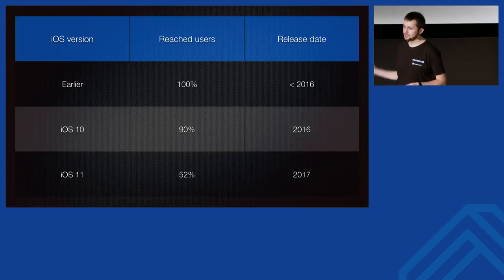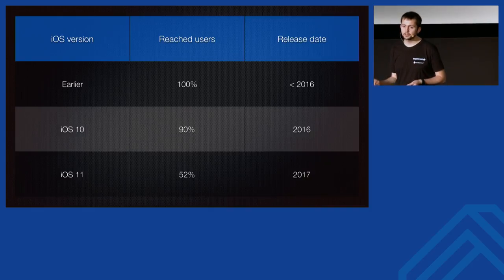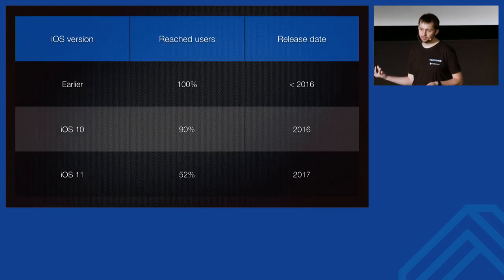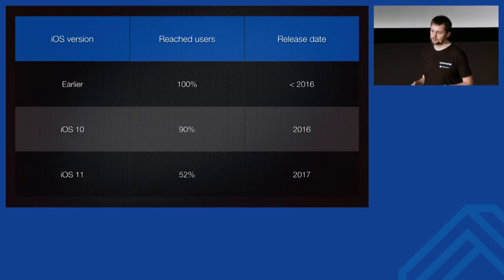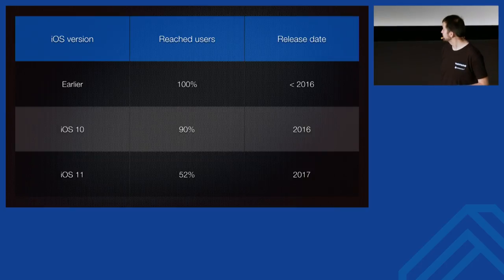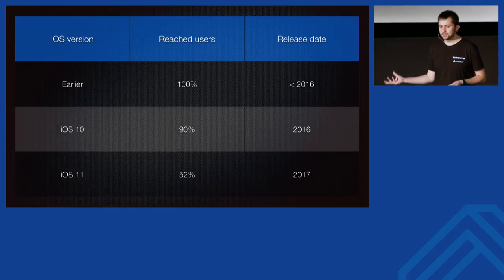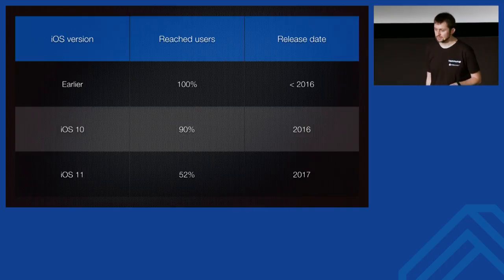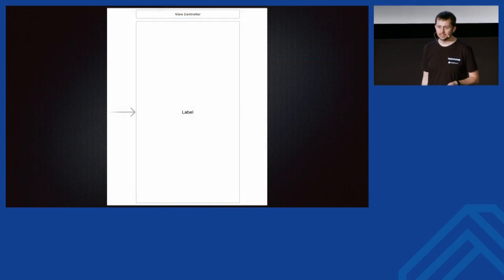Even though you must use Xcode as the default IDE for iOS applications, you can auto-generate the Xcode project from CMake using a generation flag. Getting back to the comparison with Android versioning: to support 90% of iOS users, you only need to support the iOS version from the previous year. This is a huge difference from Android — there are no middlemen between Apple and the final user, so they adopt the newest iOS version very quickly.